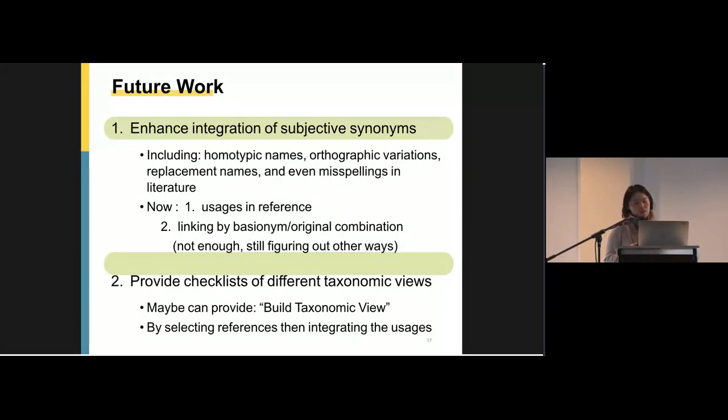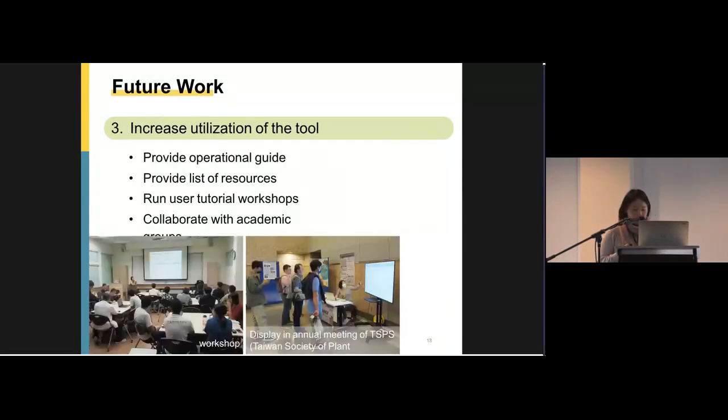Number two, maybe in the future we can provide checklists of different taxonomy views by provide function to build the taxonomy view. And it will be built by selecting references. Then after we can integrate the usage, then give you another view of a checklist. And last but not least, we need to increase utilization of the tool. We plan to provide operational guide, a list of resources, and run some user tutorial workshops. We'll also collaborate with academic groups to reach more taxonomists.